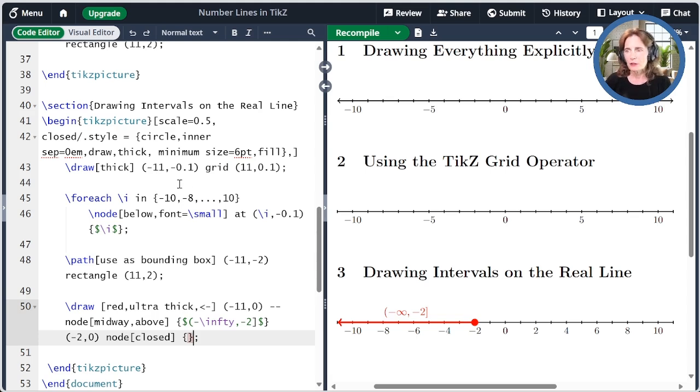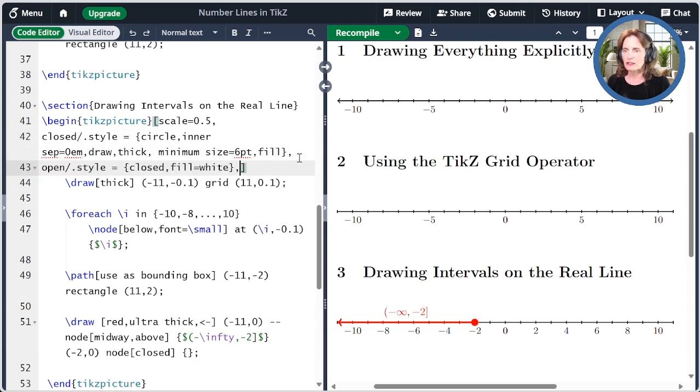Now let's define an open node type. It's basically the same as what we had. So we'll call this open, and then we do the slash dot style. We're going to use the closed style as before, and then we're going to add to the end of it that the fill is white, and that will make it filled with white.